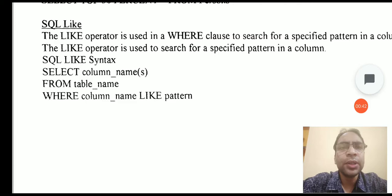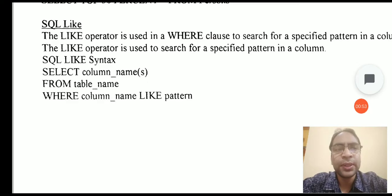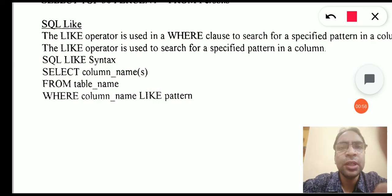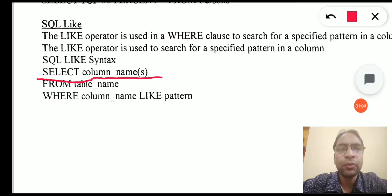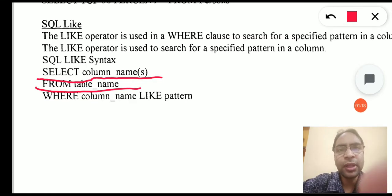The LIKE operator is used in the WHERE clause to search for a specified pattern in some column value. Let's see the syntax of this LIKE operator. We are fetching some value, so we write SELECT, then supply all the column names we want to fetch. If you want to fetch all columns from the table, supply the wildcard asterisk, then the FROM clause with the table name, and then comes the WHERE clause where this LIKE operator will be applied.